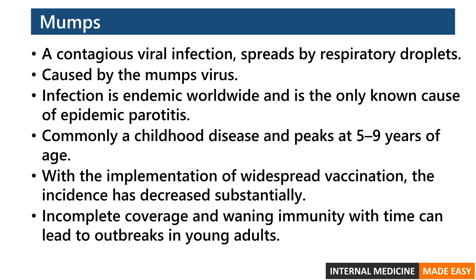Mumps historically has been a highly prevalent disease, commonly occurring in outbreaks in densely crowded spaces. These outbreaks may be due to low or incomplete vaccine coverage. For the past decade, mumps outbreaks have been occurring among young adults who were vaccinated as children, leaving researchers puzzled. Waning immunity has been proposed as a key contributing factor to mumps resurgence.